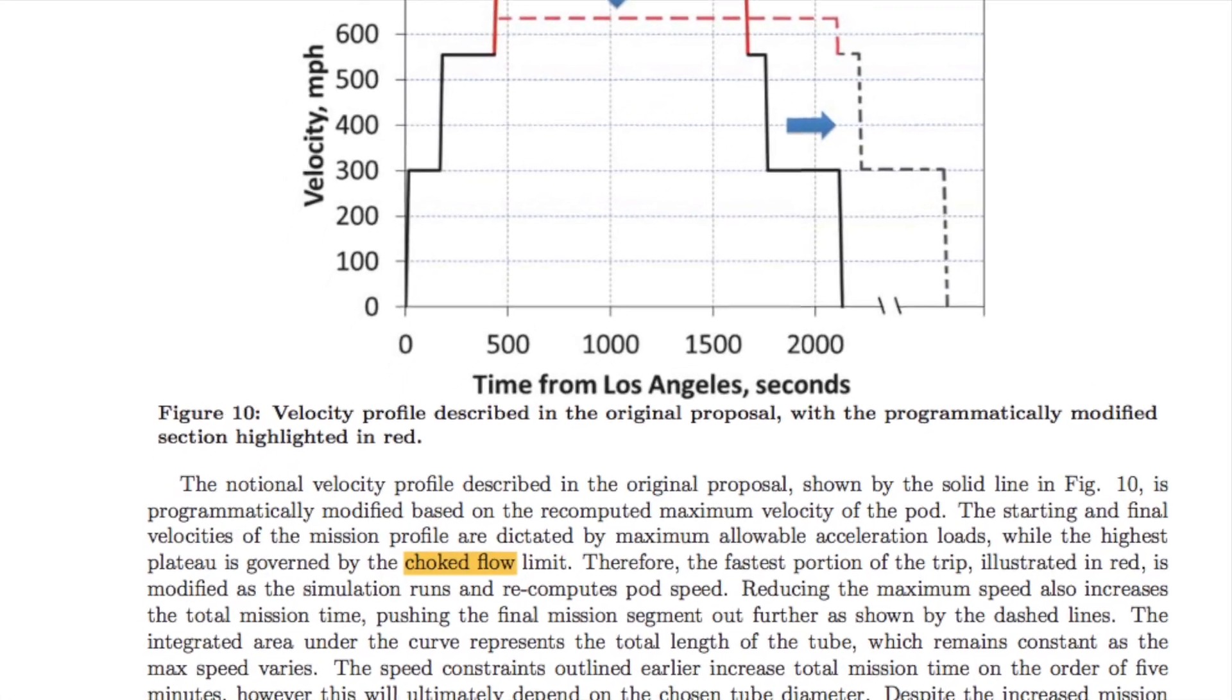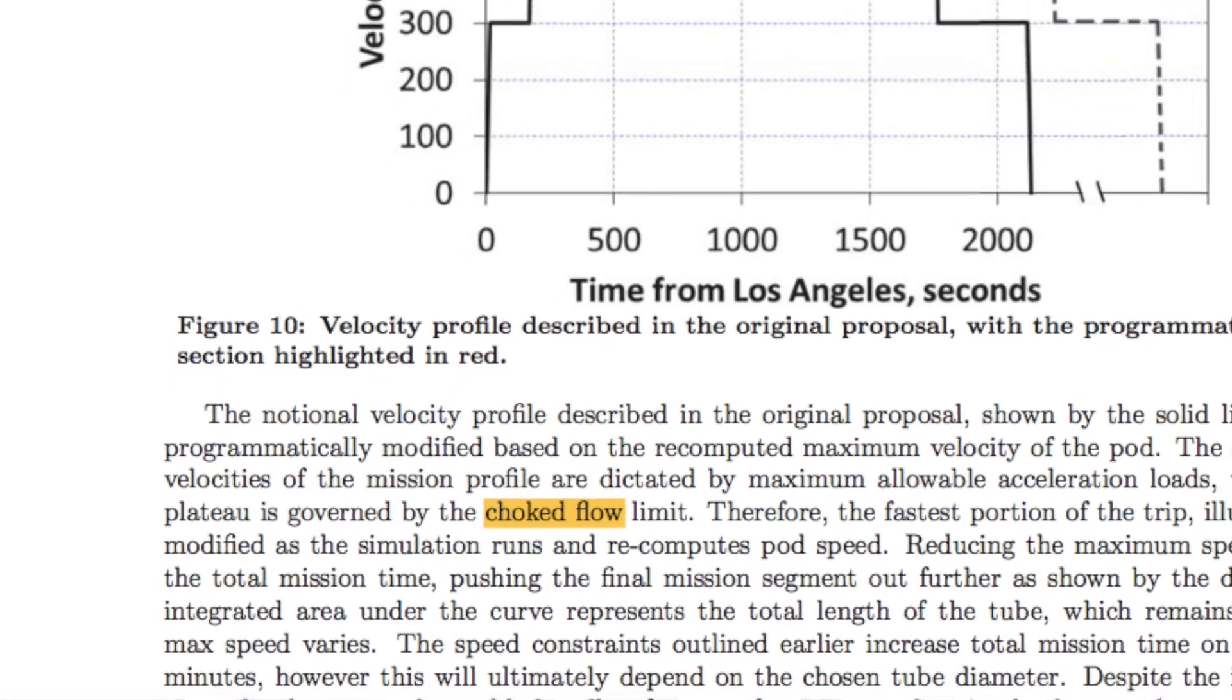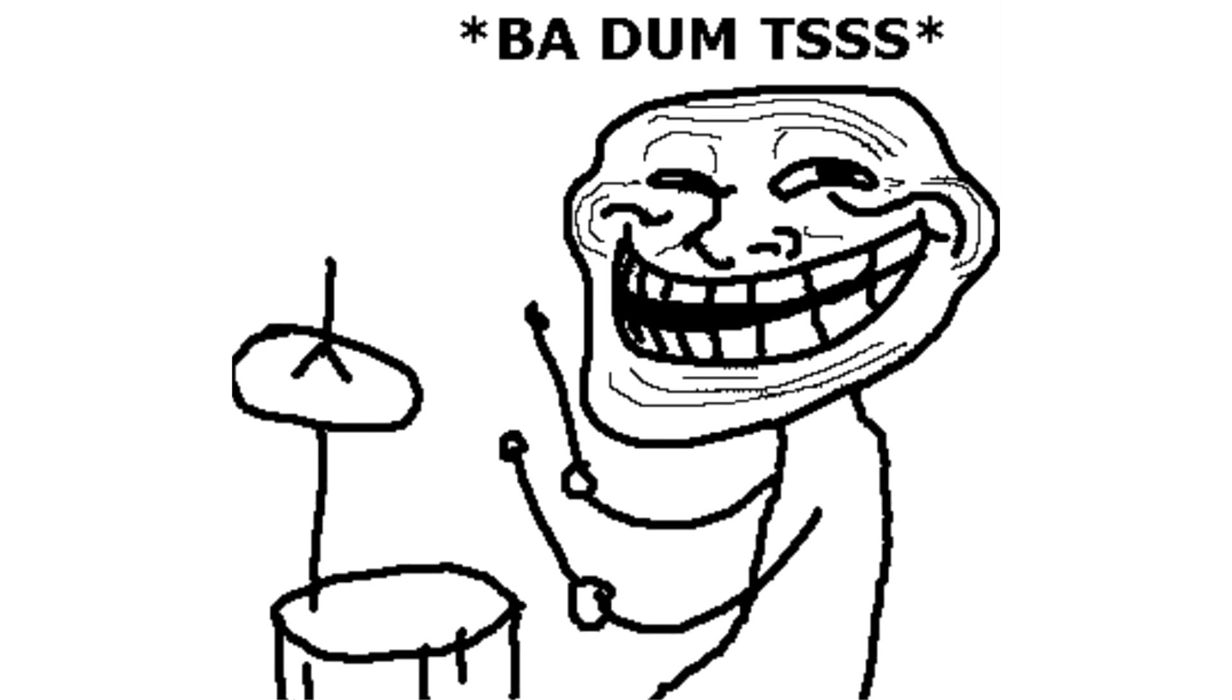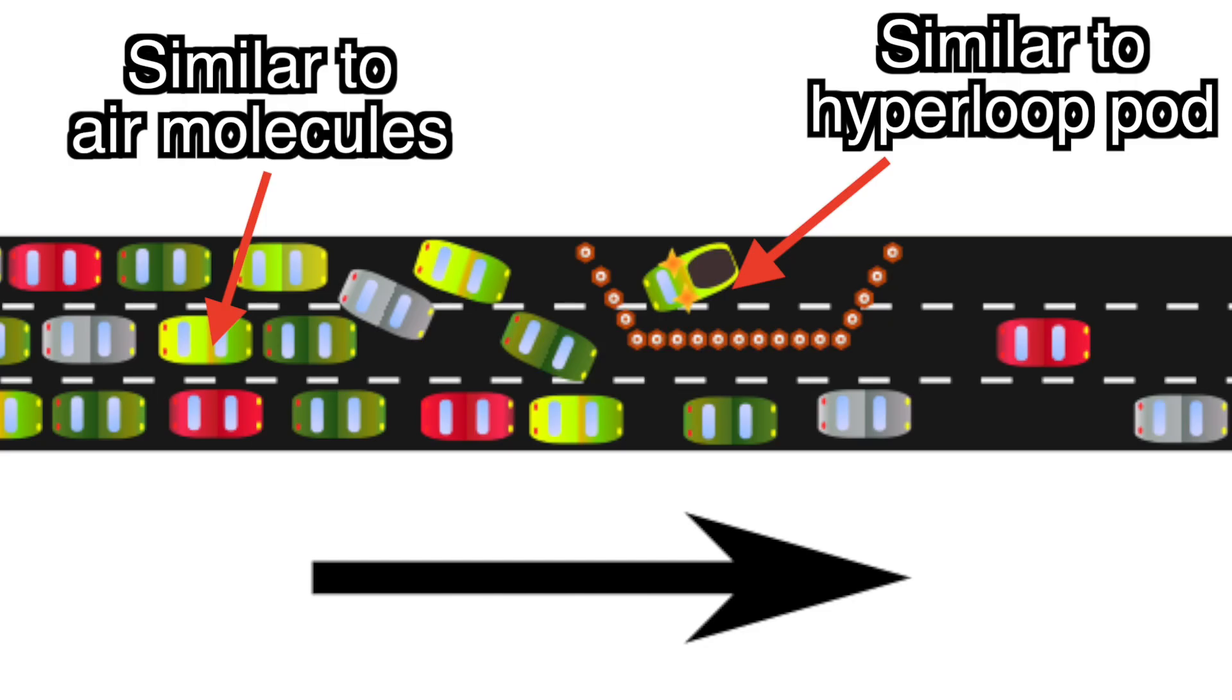They claim that Musk's design would lead to a situation known as choked flow, but the Heimlich maneuver won't help us with this one. To understand choked flow, consider how a car accident on the highway limits traffic flow.